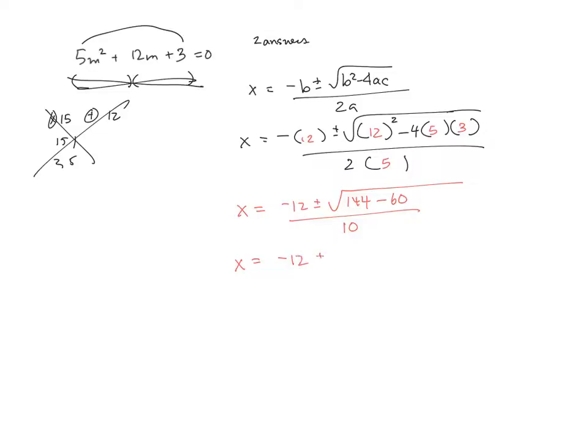So I'd get negative 12 plus or minus the square root of, that looks to be 84, all over 10. And then, I'm pretty good to there, but I'm probably giving you 4 out of 5 on a test if you get to there.